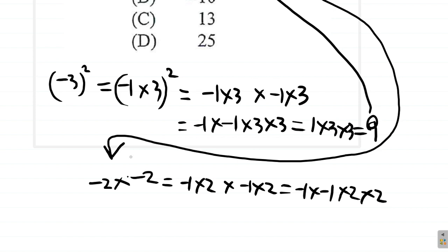What we're going to do is have negative 1 times negative 1, which is positive 1, times 2 times 2, which is 4. So, it is 4.